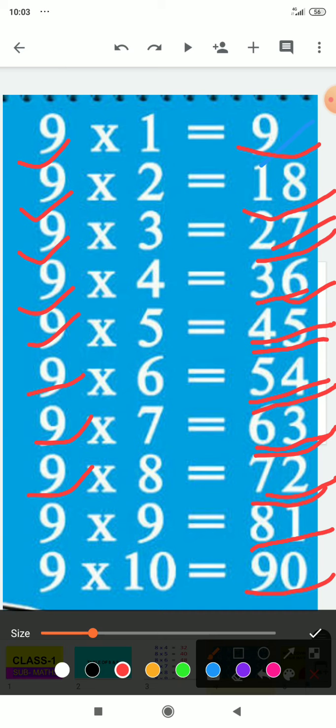9 times 8 is 72, 9 times 9 is 81, 9 times 10 is 90.